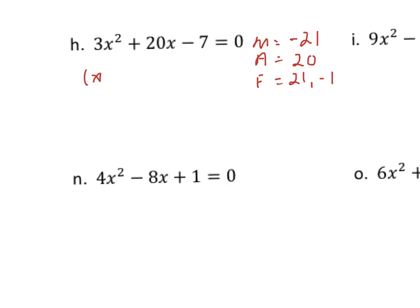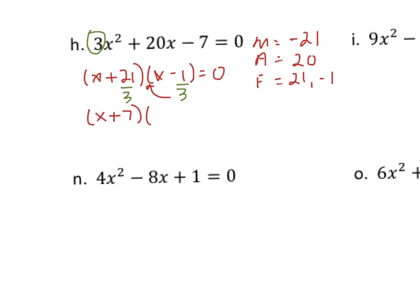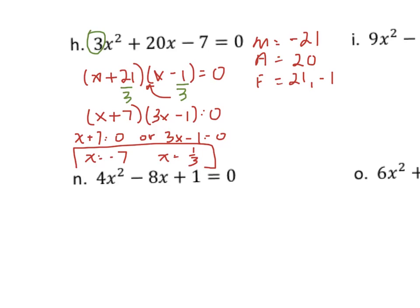From here you do like before, but you've got to account for the lead coefficient of 3. You've got (x + 21)(x − 1), but you have to divide both of those numbers by the lead coefficient of 3, then reduce. So x + 21/3 = x + 7, and x − 1/3 — since it doesn't reduce, you pull the 3 in front of the x, giving (x + 7)(3x − 1). Using zero products: x + 7 = 0 or 3x − 1 = 0, giving x = −7 or x = 1/3.